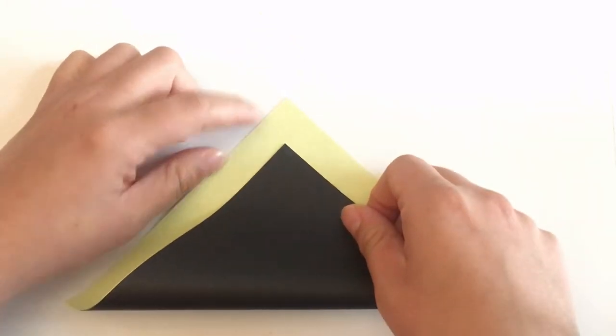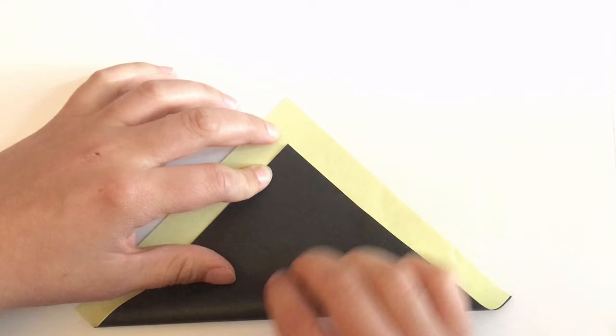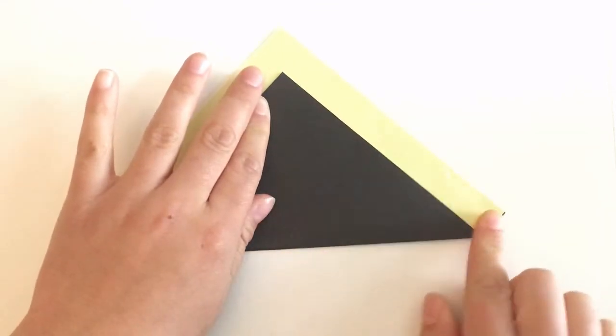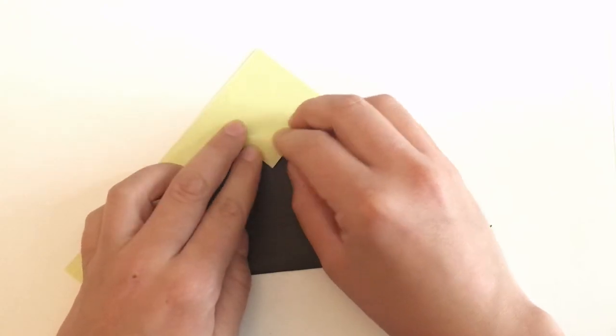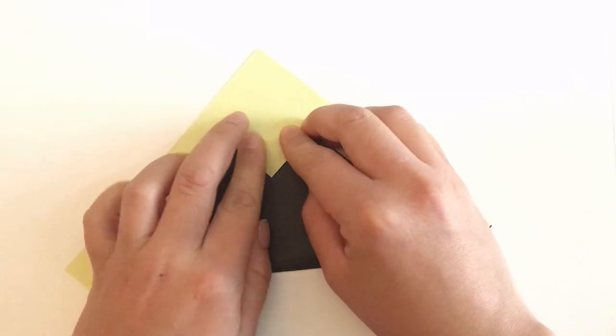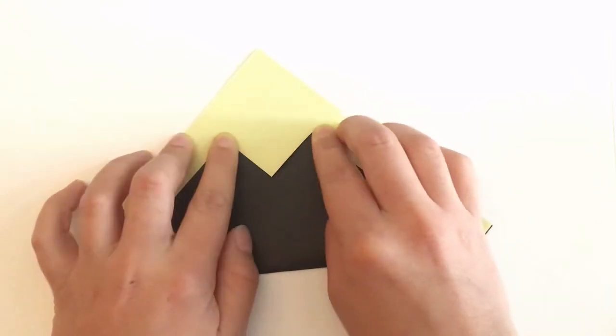Fold it about three quarters over, make sure both points are lined up, and make a hard crease. Then pick up the point you just had and fold it back until there's about three to five centimeters of tan paper.